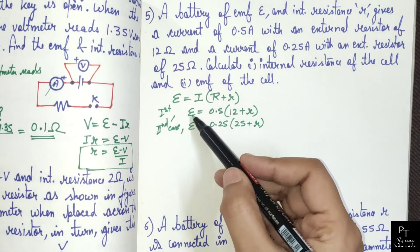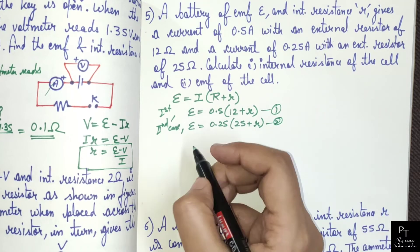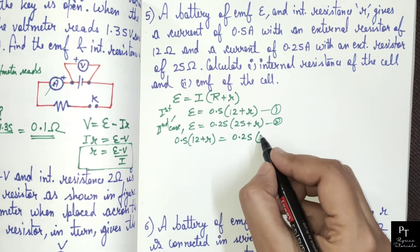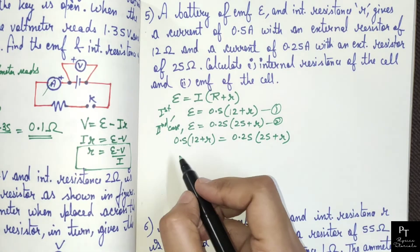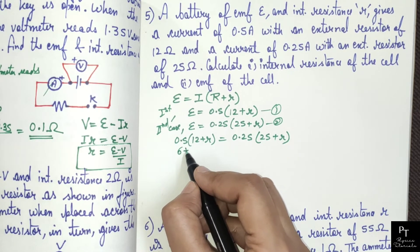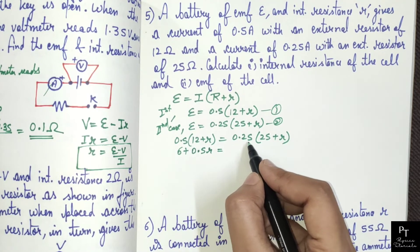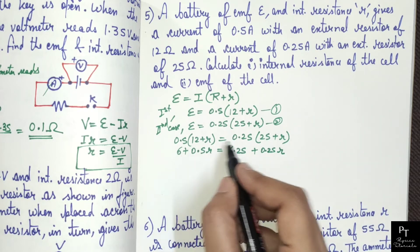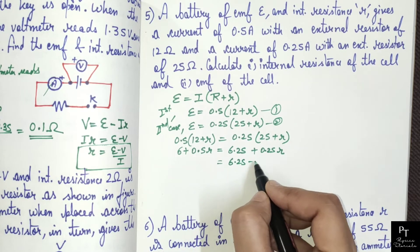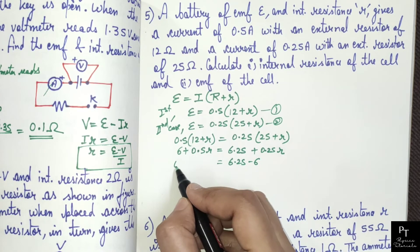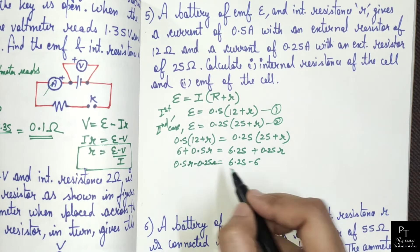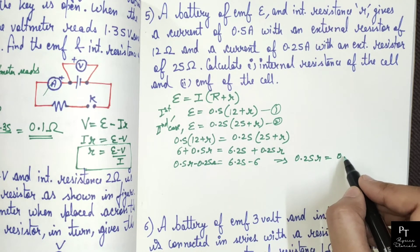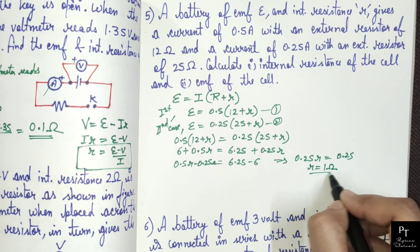Since both equations have the same EMF on the left side, equating them: 0.5 × (12 + r) = 0.25 × (25 + r). Multiplying out: 6 + 0.5r = 6.25 + 0.25r. Rearranging: 0.5r minus 0.25r equals 6.25 minus 6. So 0.25r equals 0.25. Therefore internal resistance equals 1 ohm.